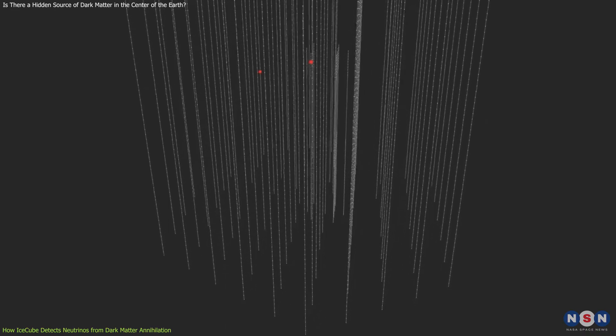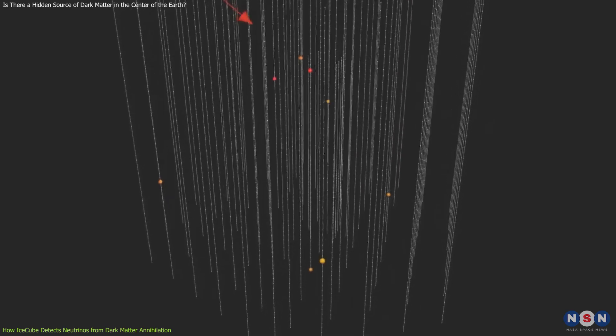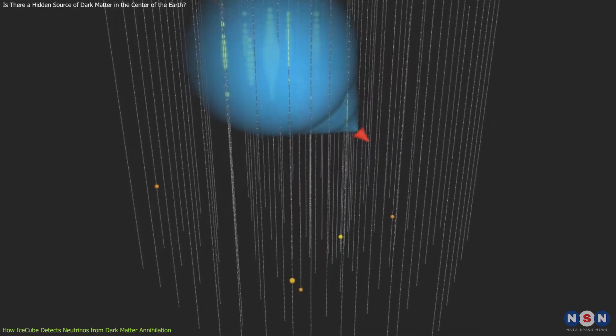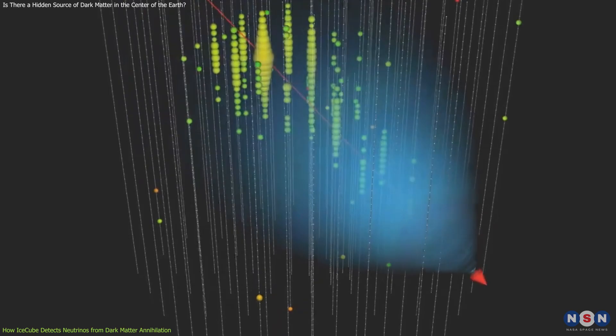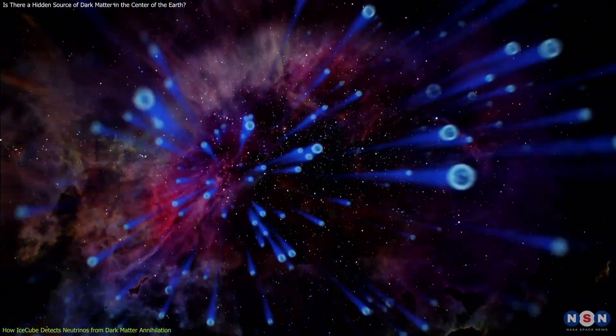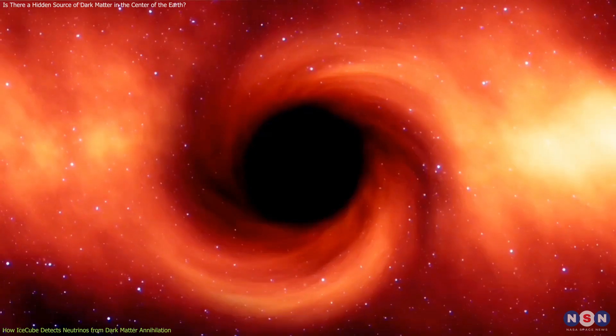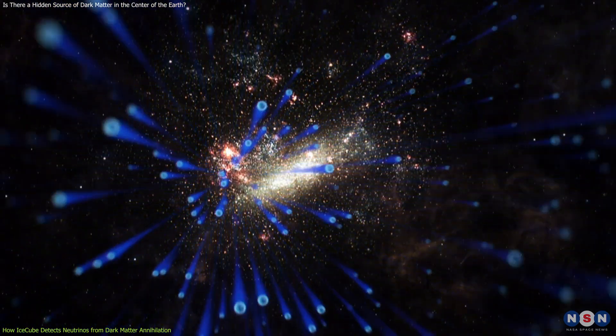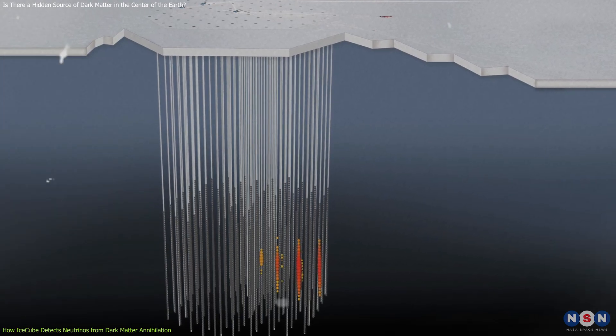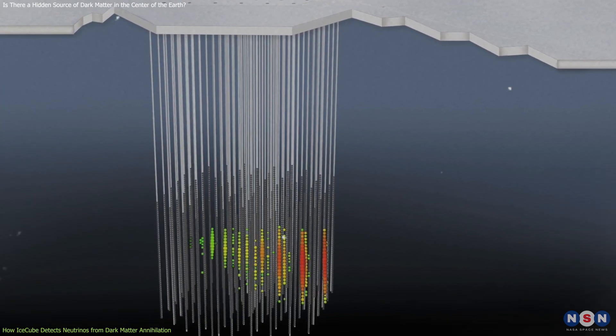By measuring the direction, energy, and timing of these flashes, IceCube can reconstruct the properties and origin of the neutrinos. IceCube is designed to detect neutrinos from various sources in the sky, such as exploding stars, black holes, or active galaxies. But it can also detect neutrinos from below, coming from the center of the Earth.